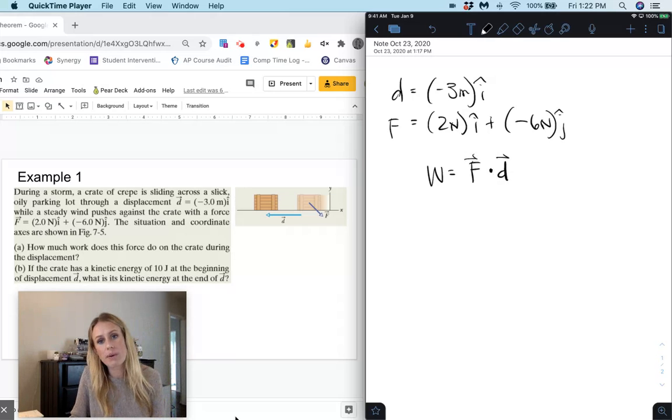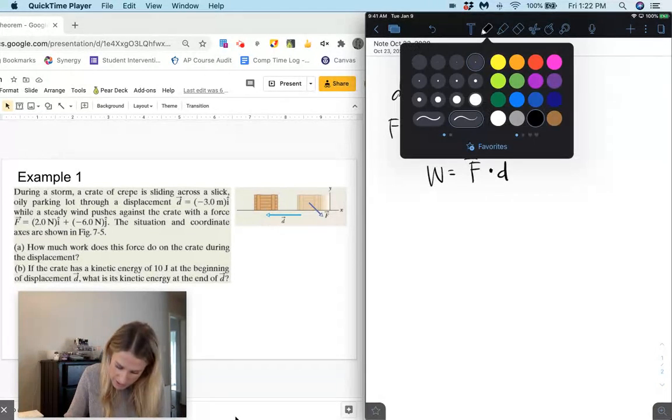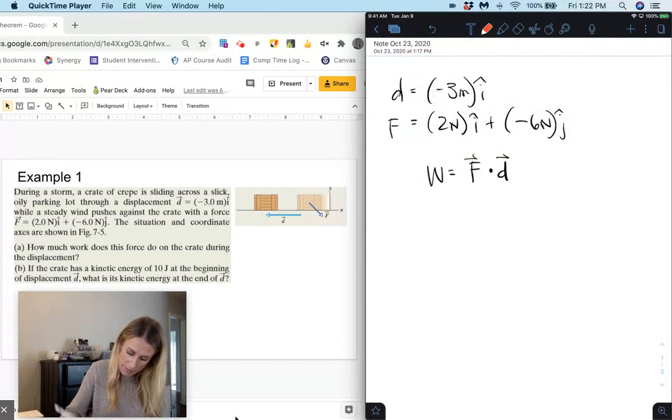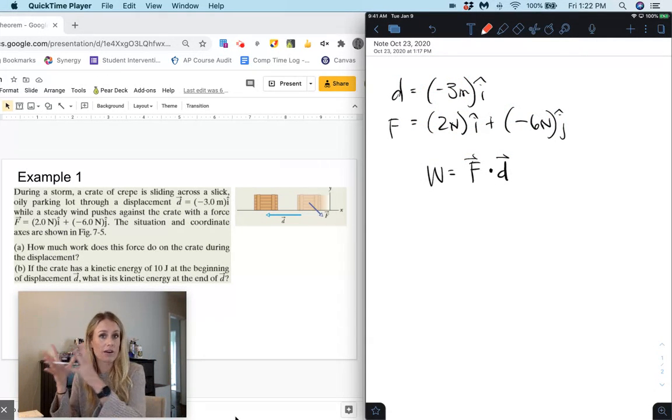But that work remember is not a vector, so what we do here is we just are going to multiply our i-hats together, our j-hats together, our k-hats together.